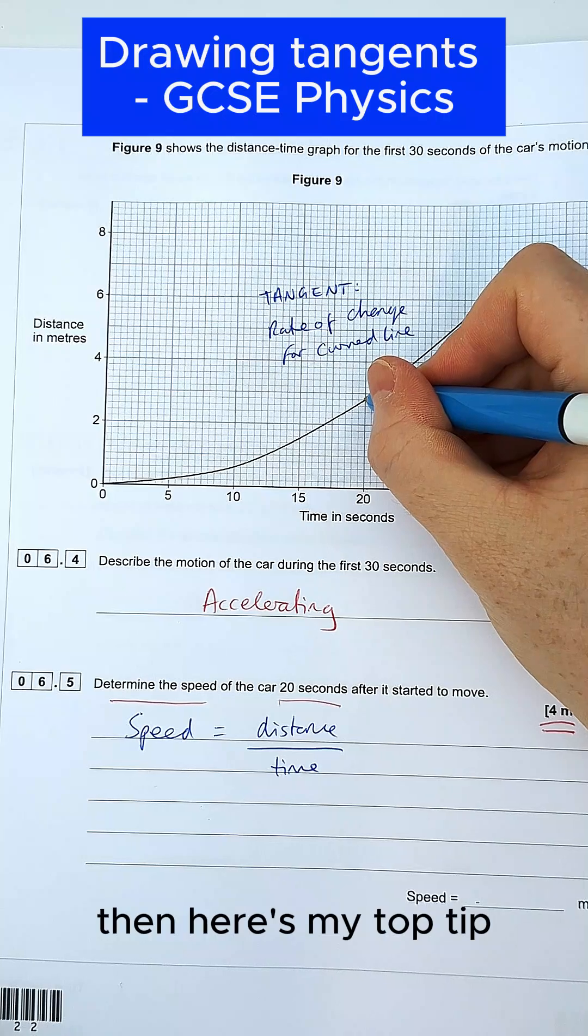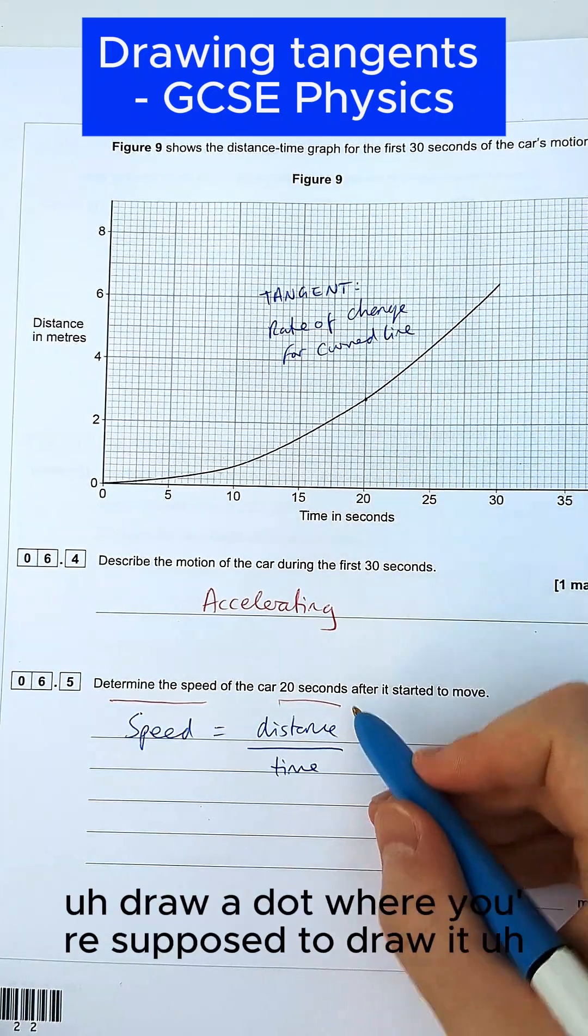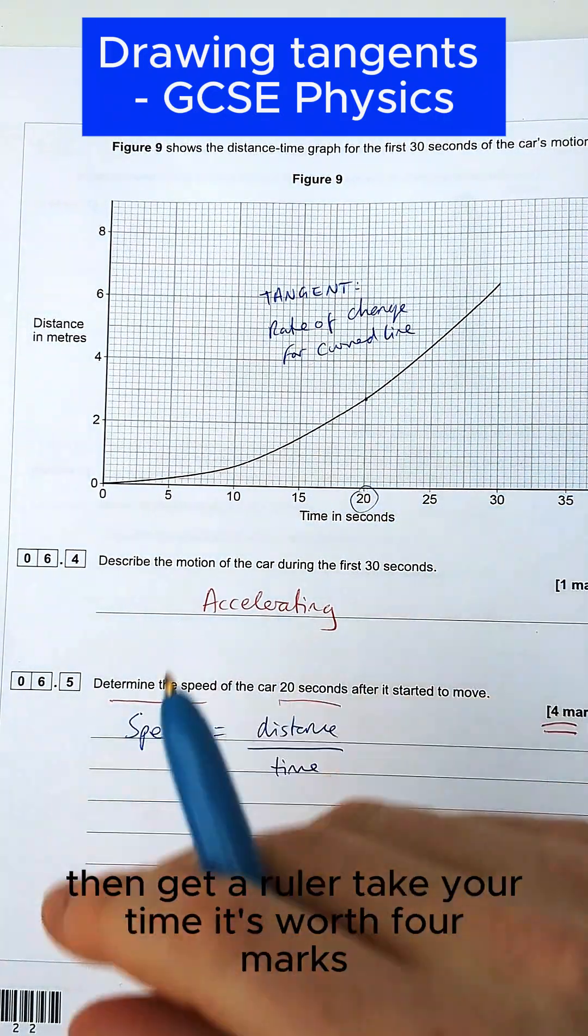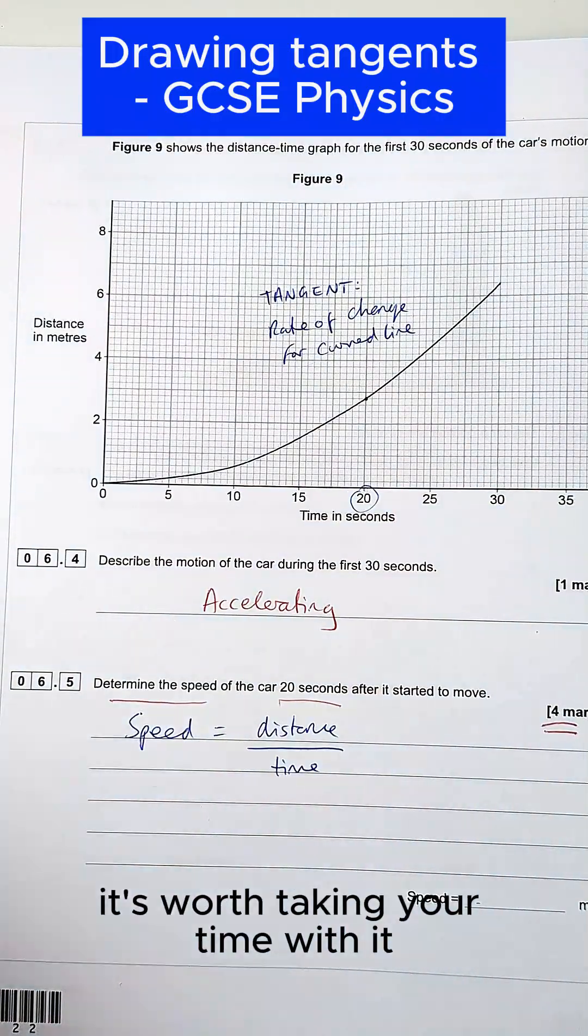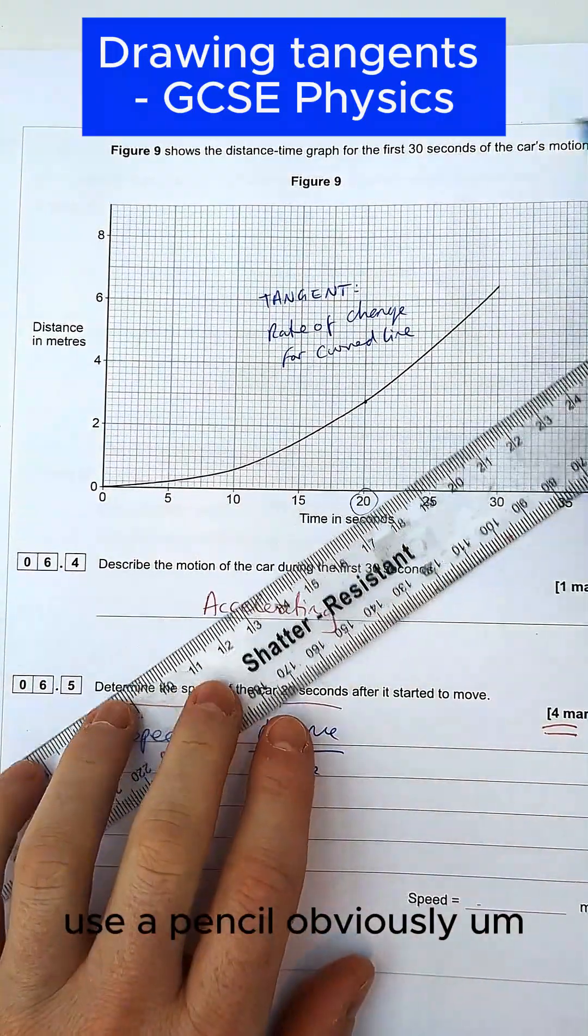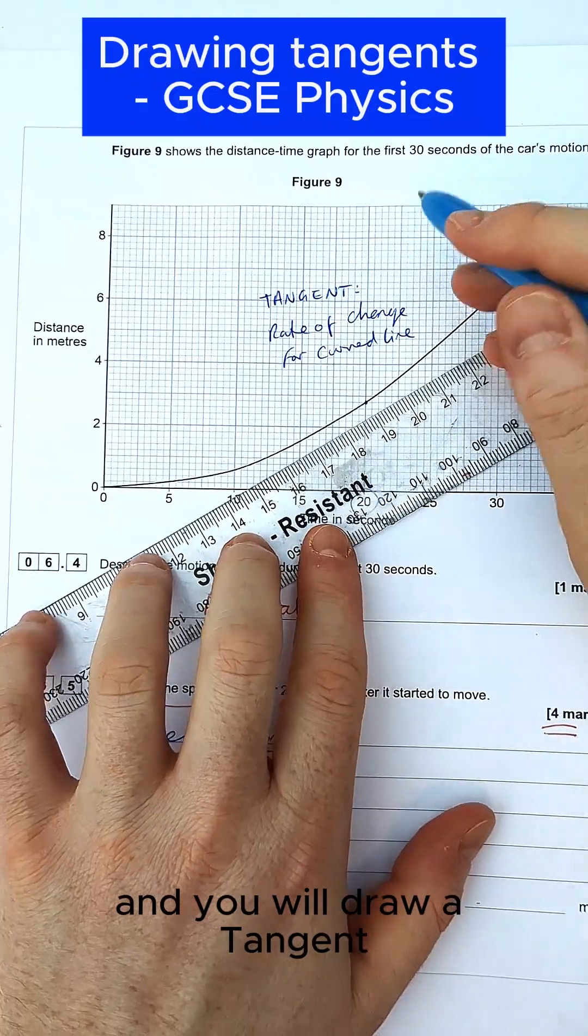Okay, so first step we're drawing a tangent then. Here's my top tip. Draw a dot where you're supposed to draw it, which is 20 seconds. Then get a ruler. Take your time. It's worth 4 marks so it's worth taking your time with it. Use your pencil, obviously. I'm not doing it here just because it doesn't show up that well. And you will draw a tangent.